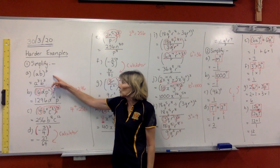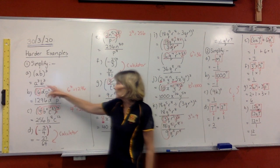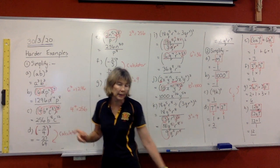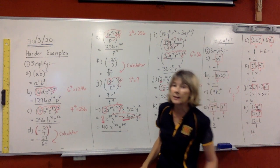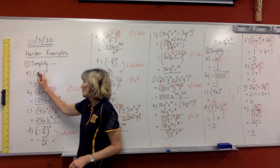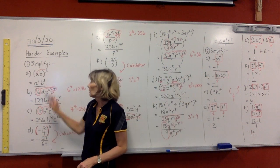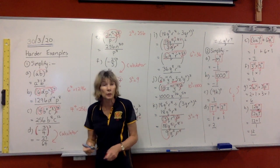So having a look here, this is just an easy one to start with. Everything in the bracket has to be raised to the power of the bracket. So we have a cubed, b cubed, and that's your answer.